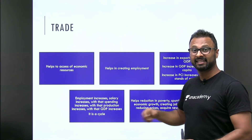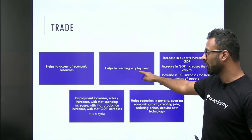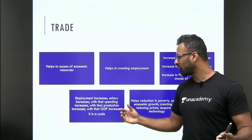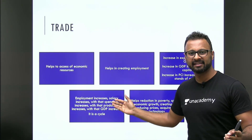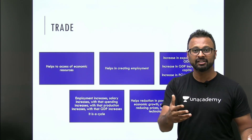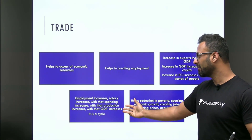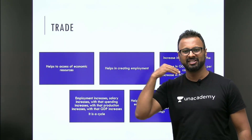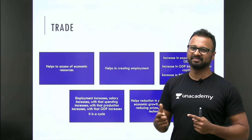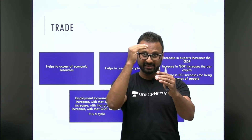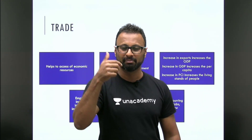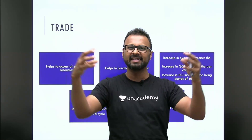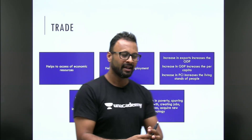Now let's go a little deeper. When employment increases, salaries increase by default. When salaries increase, the spending capacity of individuals increases. When spending increases, there's more production, which means GDP increases again — it's a cycle. You are introducing PCI, GDP, and earning capacity as concepts and linking each one together.